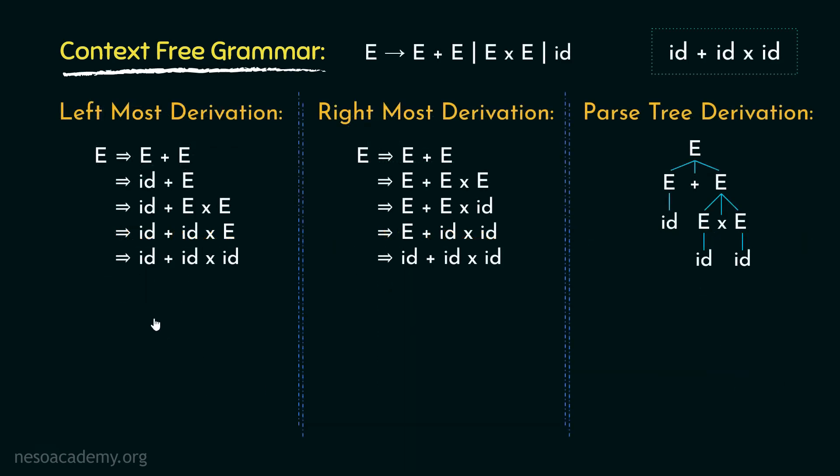Let's begin with the leftmost derivation method. Now the last time from the start symbol E, we derived E + E using the rule E can be written as E + E. This time let's use the next rule, that is E can be written as E × E. So from E, we derived the sentential form E × E.